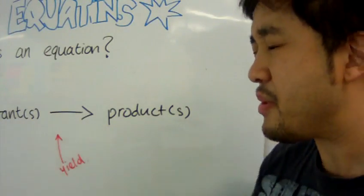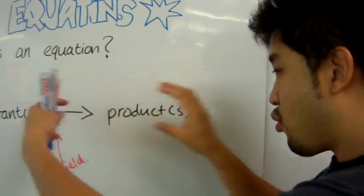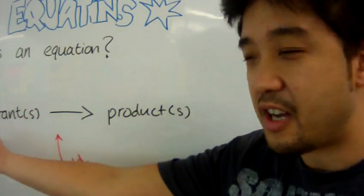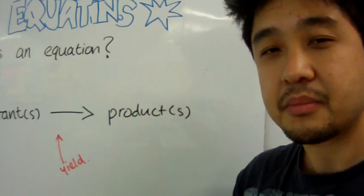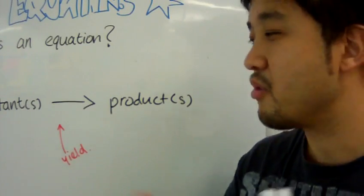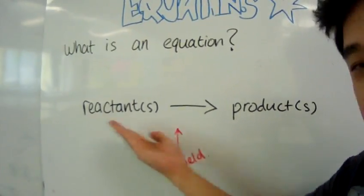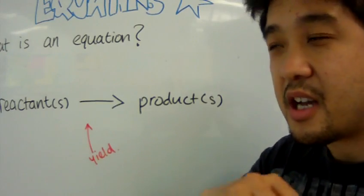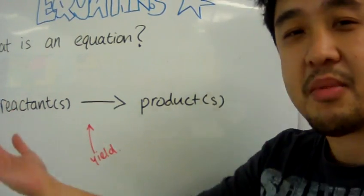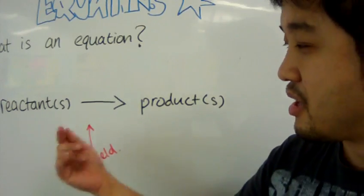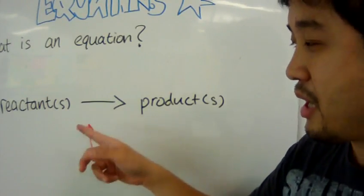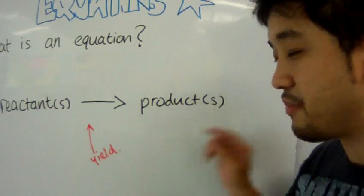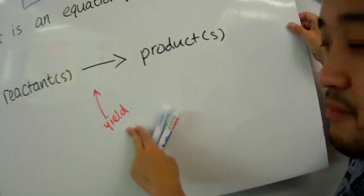So, an equation will represent this in one line. You get your starting materials, your reactants, and then your products. Now, to get from your reactants to your products, you need a signal to tell other chemists that you're making something. And we represent the making of something by an arrow. And this arrow means yield.